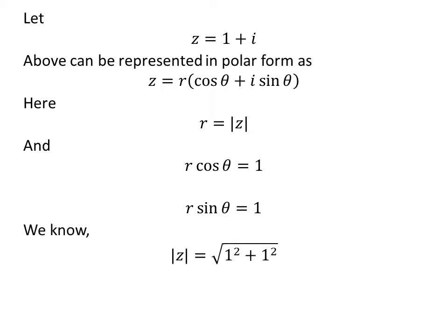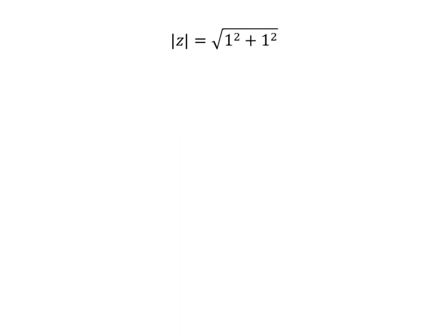As per the definition, the modulus of Z is equal to the square root of the square of 1 plus the square of 1, which implies the modulus of Z is equal to square root of 2, which is equal to R.